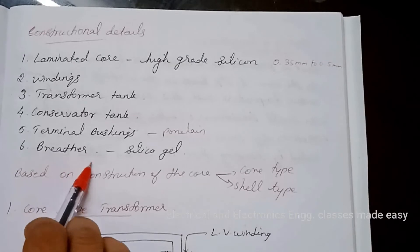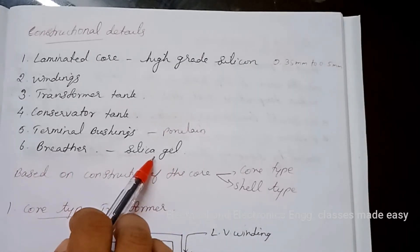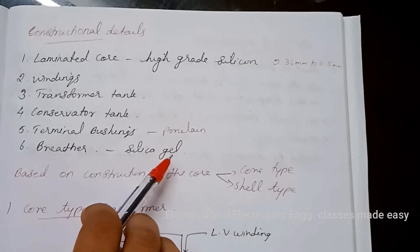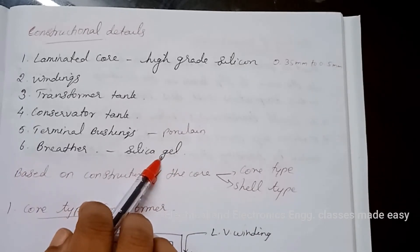Breather. The function of the breather is to absorb moisture from the air which is taken in by the transformer due to contraction of oil in the tank due to cooling. The material used in the breather is silica gel which absorbs moisture from the incoming air.